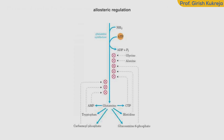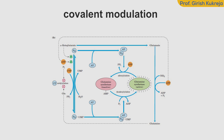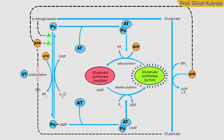Along with allosteric regulation, glutamine synthetase is also regulated by covalent modulation. This covalent modulation is mediated by adenylation — that is, the addition of AMP to a tyrosine residue located near the enzyme's active site.